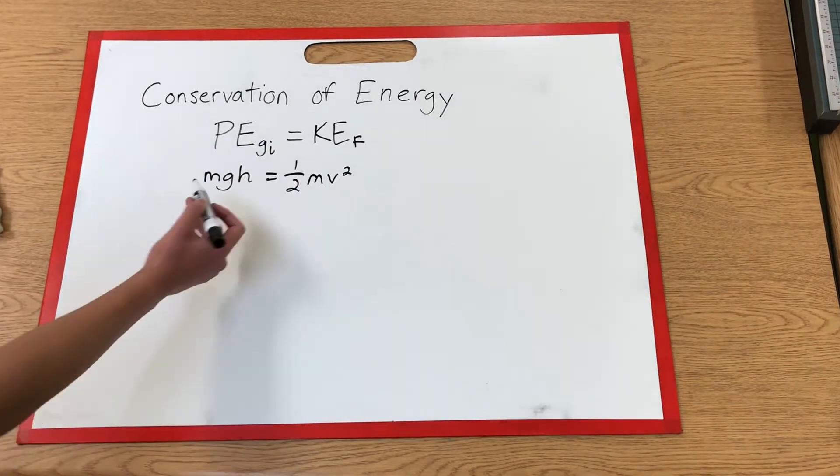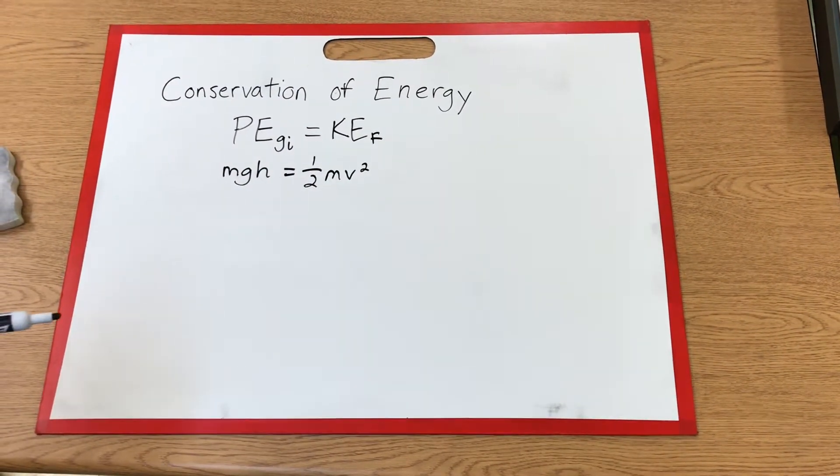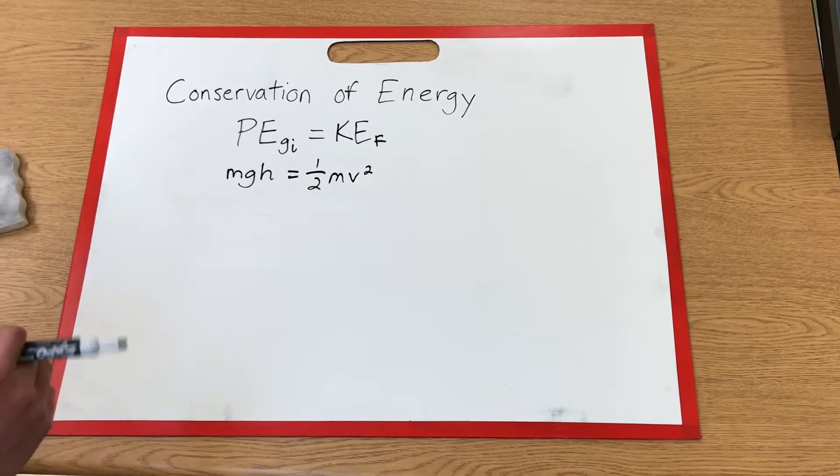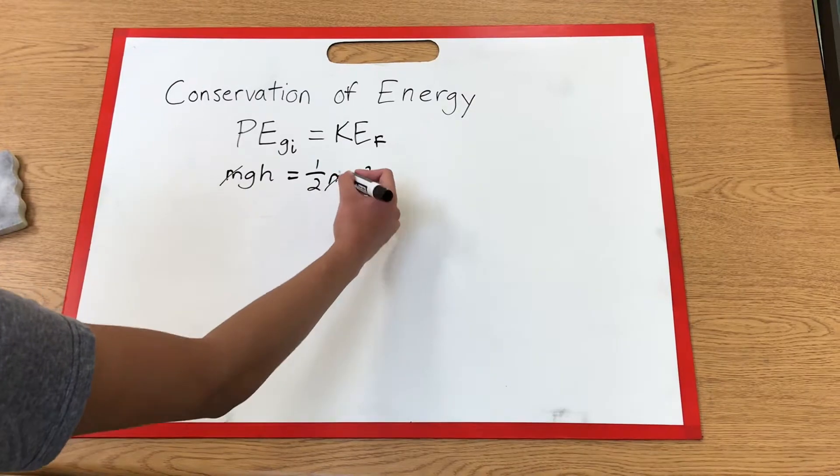As you can see, mass is on both sides of the equation. Here in physics, we are not judgmental. We don't care about how massive you are. So, we are going to cross out both on both sides.